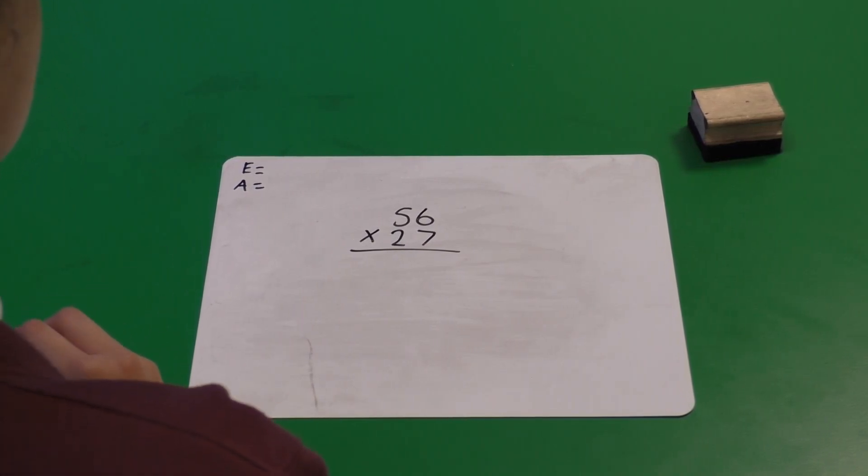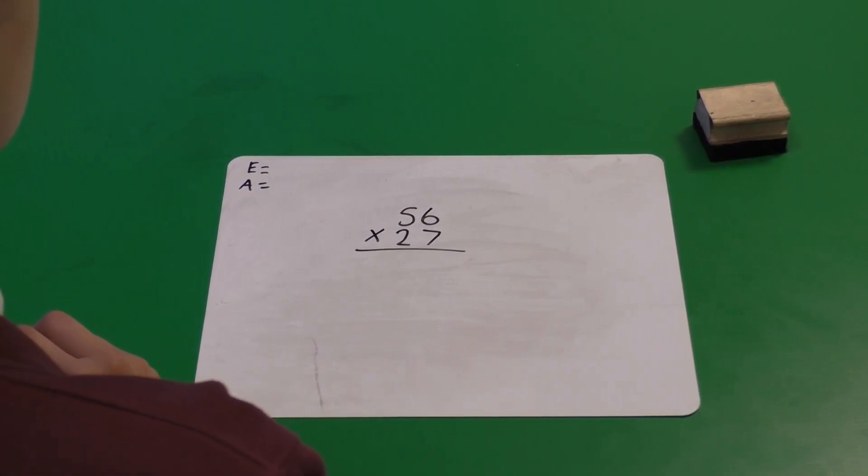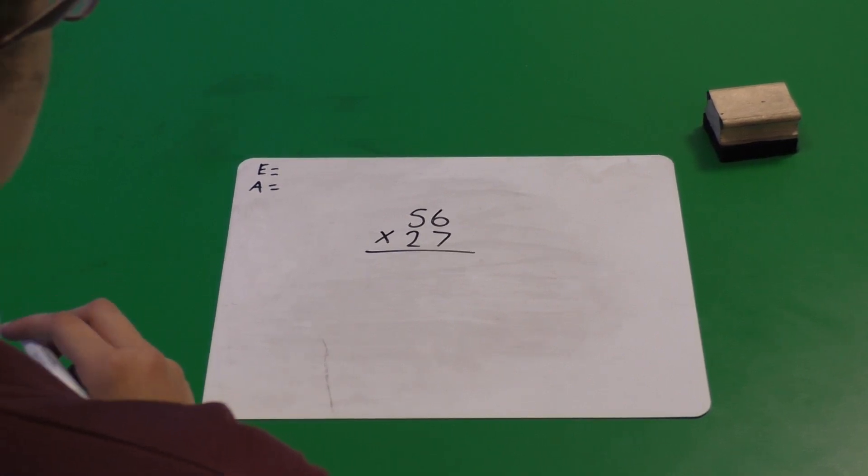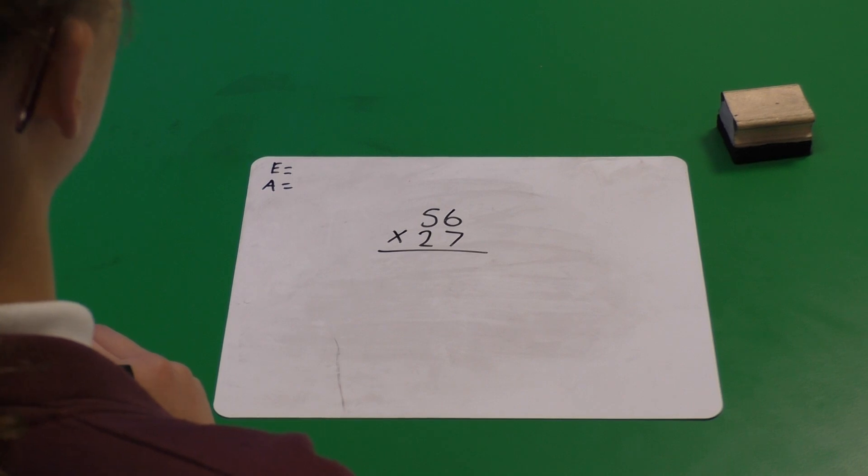I'm going to be showing you how to do 56 multiplied by 27 using the compact multiplication method. Before we begin, we need to estimate. Does anybody know how we do that?